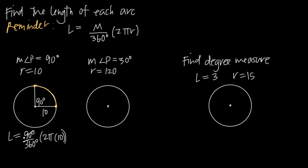When we take 90 divided by 360, we're going to get 1 over 4, so this fraction simplifies to one-fourth. Then instead of 2π times 10, we can call this 20π when we multiply 2 by 10. So we have 20π divided by 4, and the length is going to be 5π.